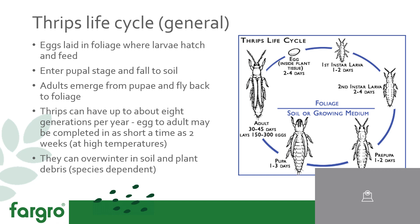So you have the initial pre-pupa in the growing media, then pupa. Once developed into adults, they'll emerge with wings and fly back up into the foliage and continue to feed. They can have up to about eight generations per year. Egg to adult may be completed in as little as two weeks, but this is very temperature dependent — lower temperatures can massively reduce the number of generations.